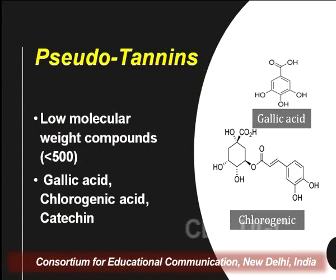Though pseudo tannins are polyphenolic in nature with numerous hydroxyl groups, and sometimes give specific tannin tests, they are considered pseudo tannins because they do not exhibit the true property of a tannin. The most common examples are gallic acid, chlorogenic acid, and a single molecule of catechin. These molecules are ubiquitous in nature, but all plants containing them cannot convert animal skin into leather because of the smaller molecular weight and size.